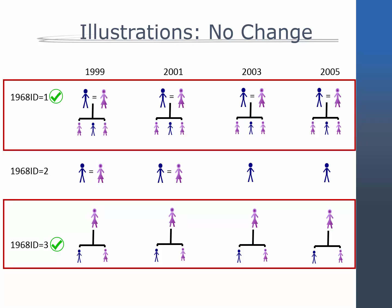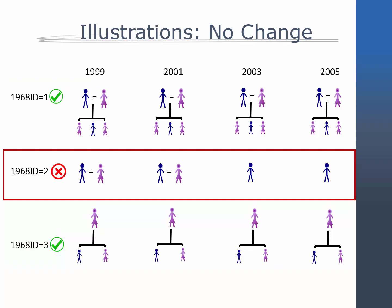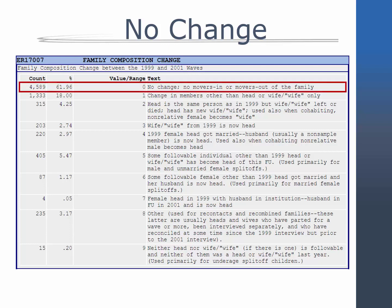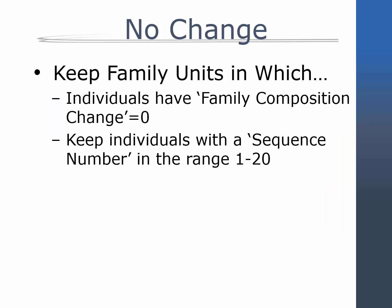First, let's identify families who have no change in family composition from 1999 to 2005. Families 1 and 3 keep the same structure in all four waves without anyone moving in or out, so they will be included in the sample. Family 2, however, experiences a divorce between 2001 and 2003, so they will not be included. Use the family composition change variable in each wave, where a value of 0 means no changes occurred. The sample would consist of individuals with sequence numbers in the range of 1 to 20 in family units with a family composition change of 0.